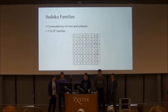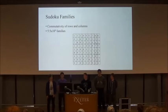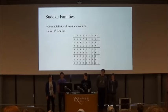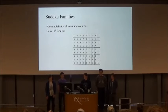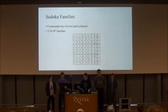We say that these two grids are part of the same family. A Sudoku family is every single possibility of shifting all the rows or all the columns to still give valid grids. There are just under 5.5 billion Sudoku families in existence.